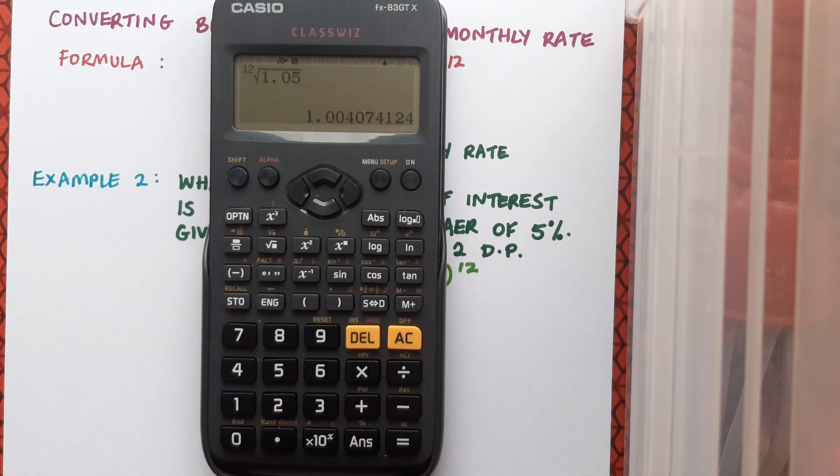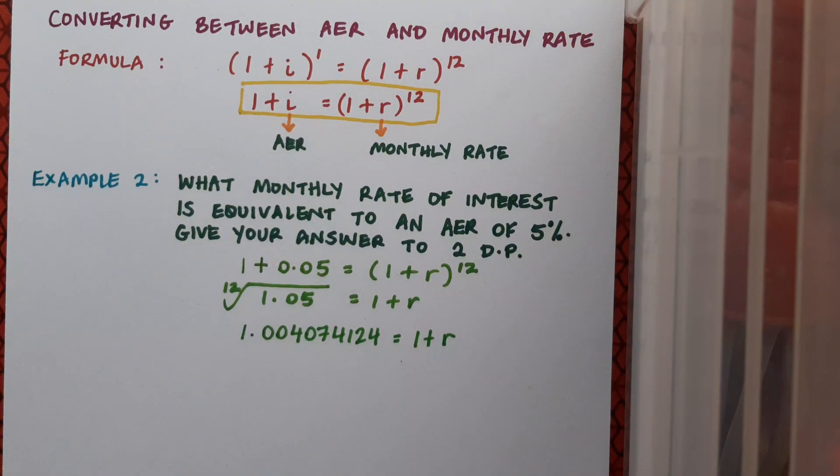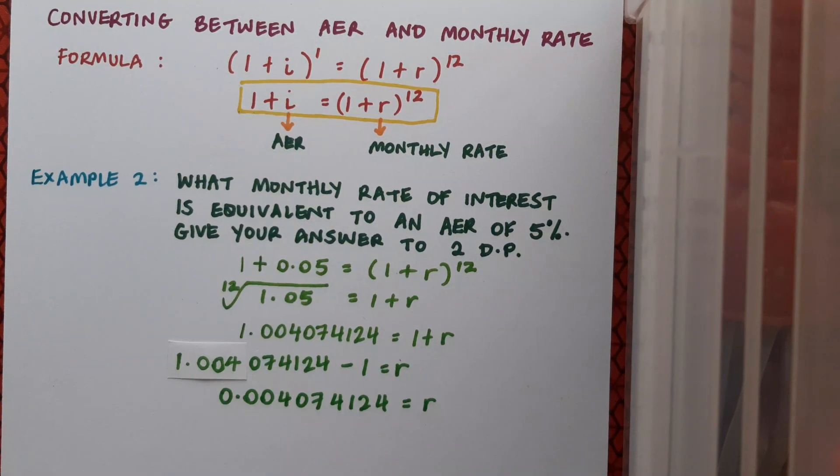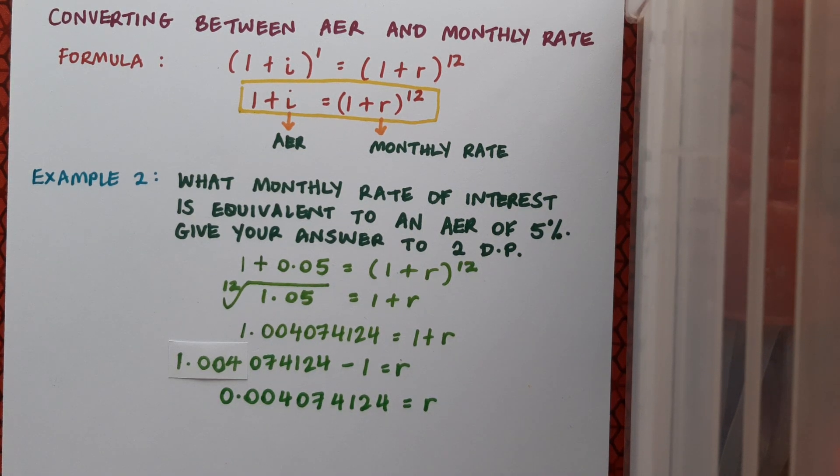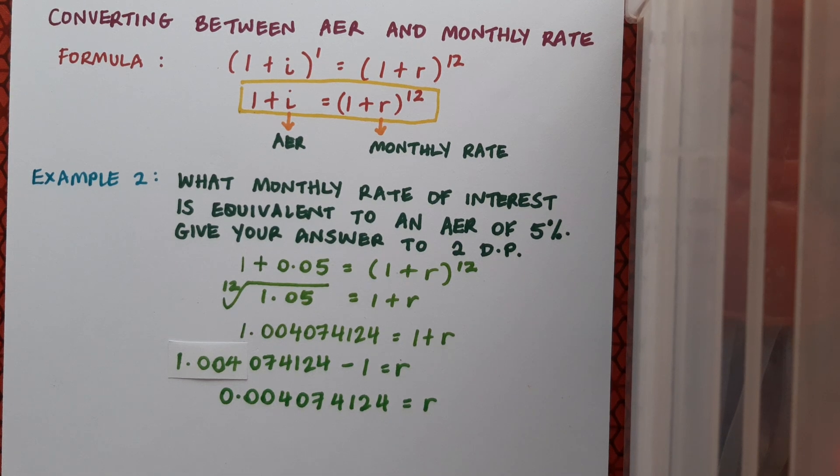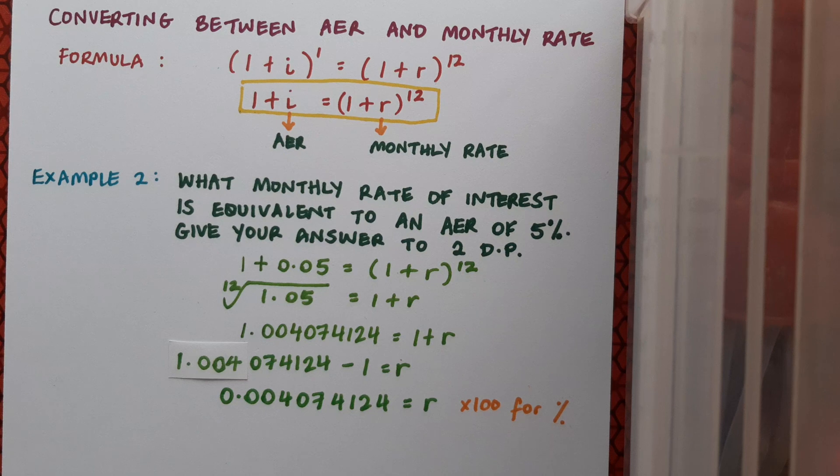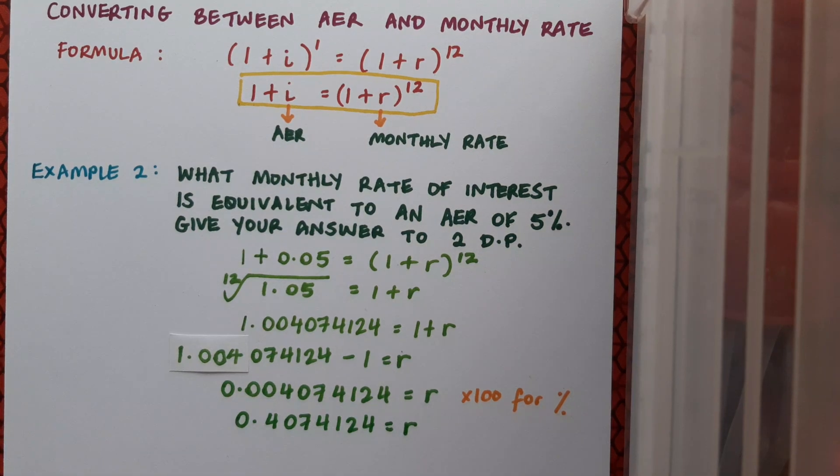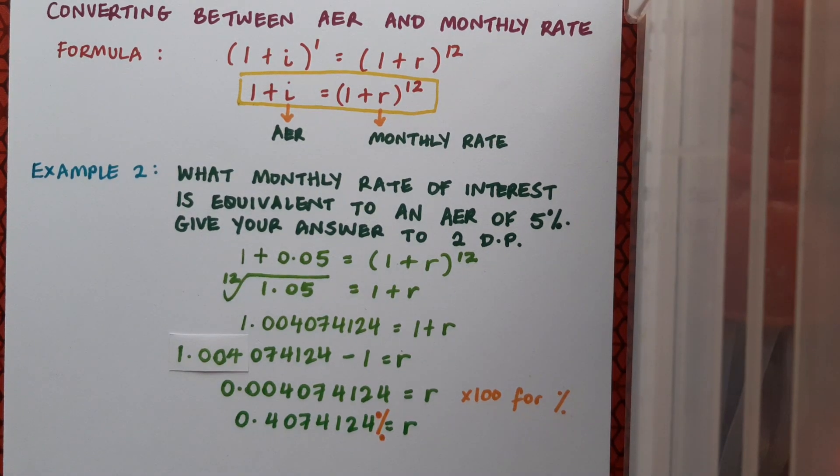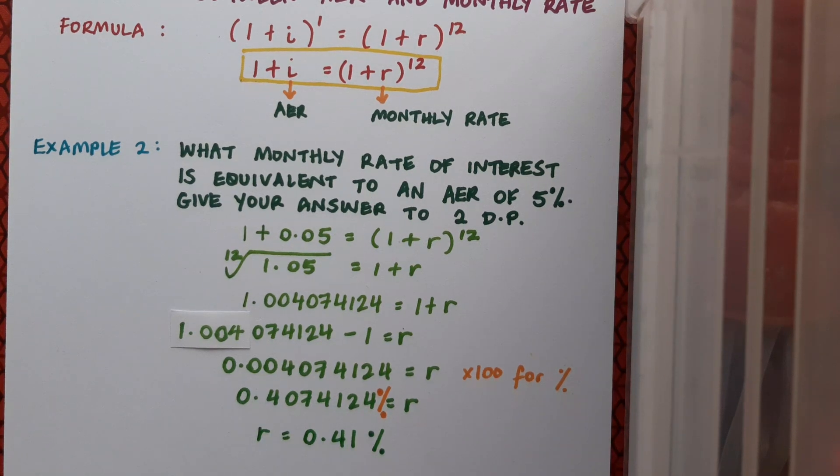So my answer comes out, it's 1.004074124. I'm going to keep all these digits for a moment and this value is 1 plus r so I'll just take the one away and I'm getting an r value of 0.004074124. Now I don't leave my answer as this and I don't round it off just yet because I want to give any interest rate answers as percentages. So I'll just times by 100 to get the percentage and I'll have 0.4074124% equals r. At this stage now I'm at the end of the question so I'll round off and r equals 0.41%.